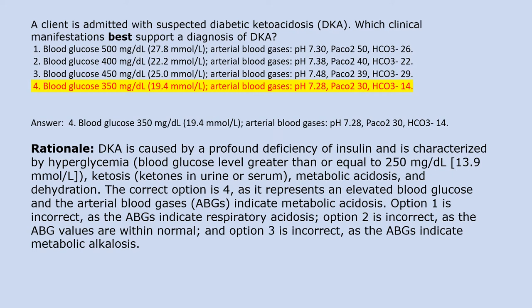Answer 4. Rationale: DKA is caused by a profound deficiency of insulin and is characterized by hyperglycemia (blood glucose ≥250 mg/dL / 13.9 mmol/L), ketosis, metabolic acidosis, and dehydration. The correct option is 4, as it represents elevated blood glucose and ABGs indicating metabolic acidosis. Option 1 is incorrect as ABGs indicate respiratory acidosis. Option 2 is incorrect as ABG values are within normal limits. Option 3 is incorrect as ABGs indicate metabolic alkalosis.